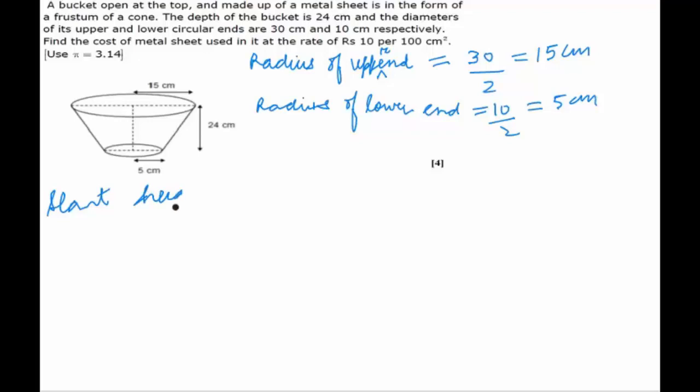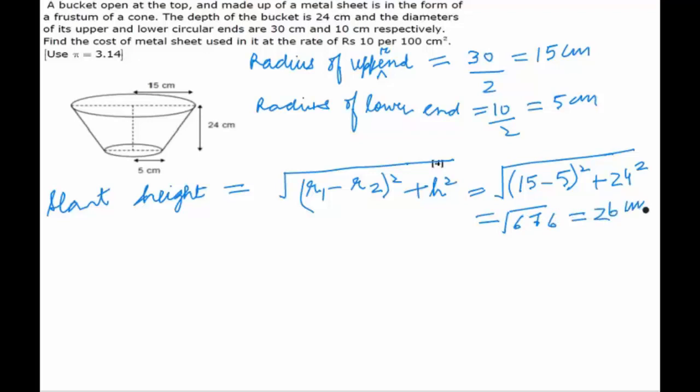The slant height is equal to under root of R1 minus R2 H square plus H square. This is equal to under root of 15 minus 5 H square plus H square. So 10 square plus 24 square, that is 100 plus 576, which is equal to under root of 676 and this is 26 cm. So this is the slant height.